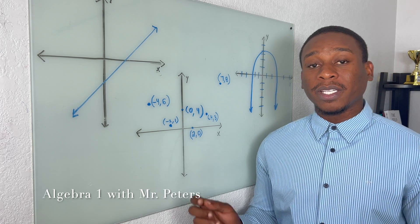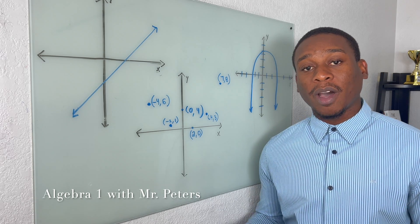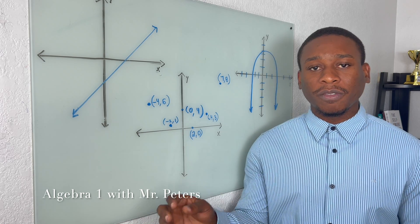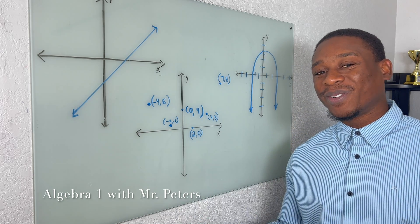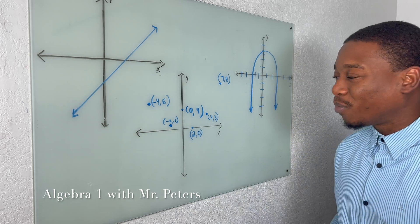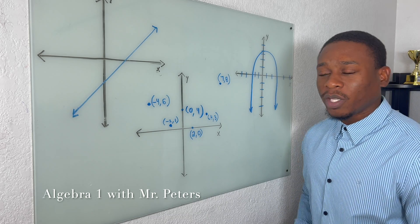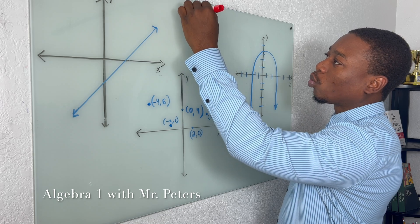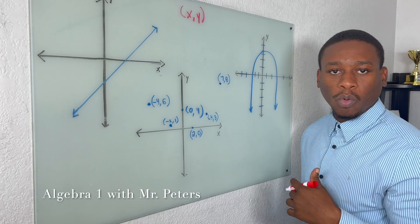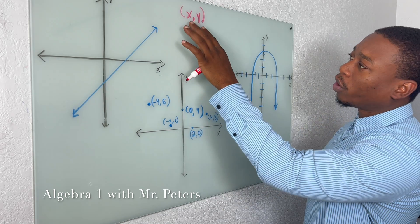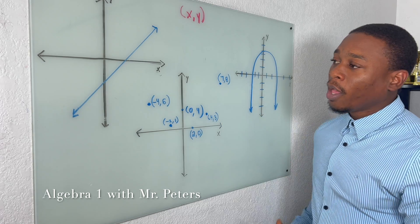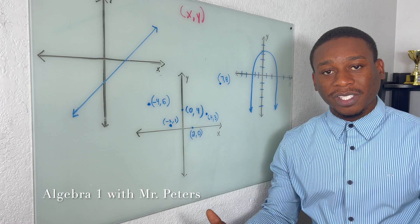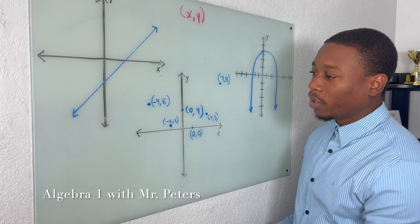What's good, everybody? Today we're talking about domain and range of a graph. This is a student-requested video. If you find it helpful, smash the like button for us. So the first thing we need to know is that domain and range is related to a relation — talking about coordinate pairs, X and Y. And what we want to do in each of these graphs is identify what X and Y values are included.